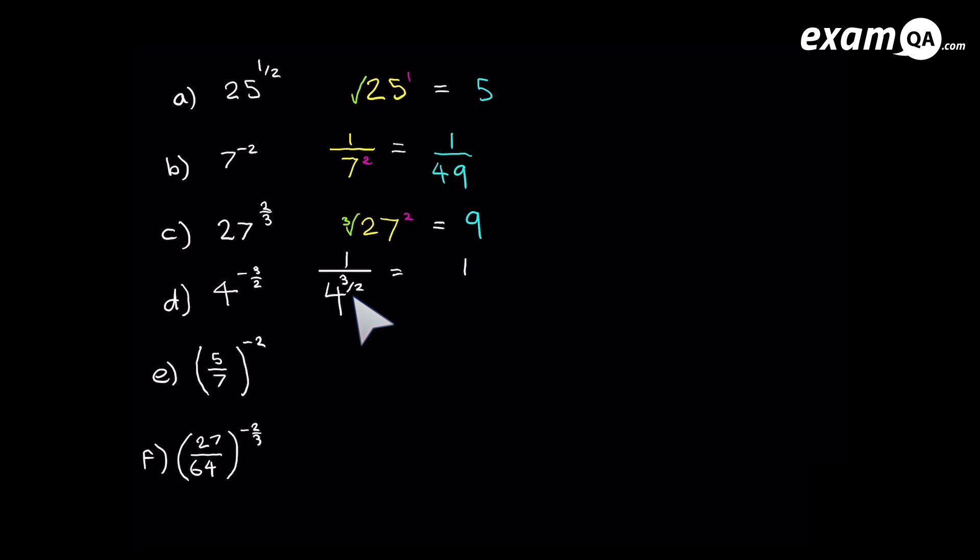So it's still 1 over. Now remember the top of the fraction powers and the bottom roots. So it's going to be 4 to the power of 3, and the bottom roots it and it's a 2, so it will be a square root. Remember you can do either first, but we'll go ahead and square root it first. And the square root of 4 is 2, and 2 cubed is 8.